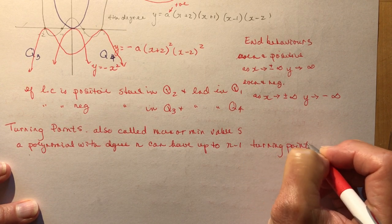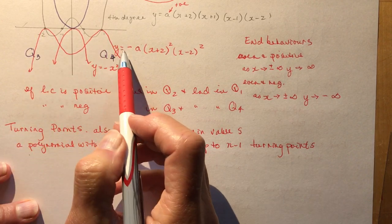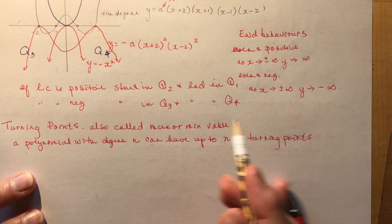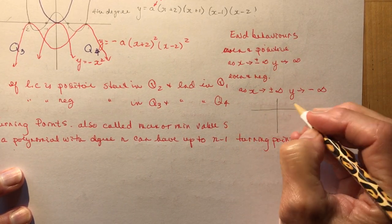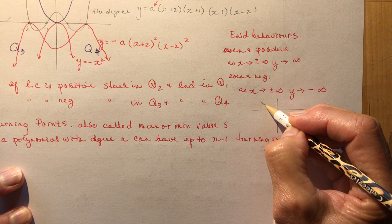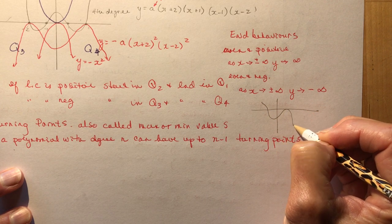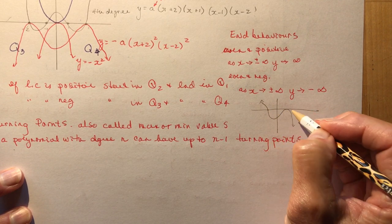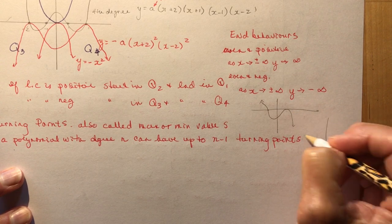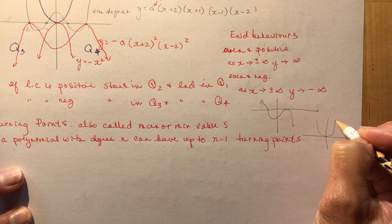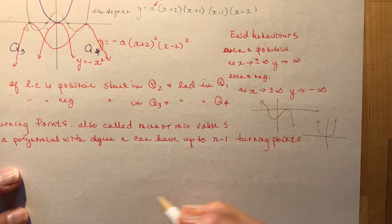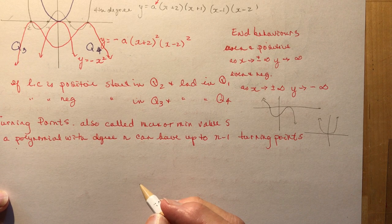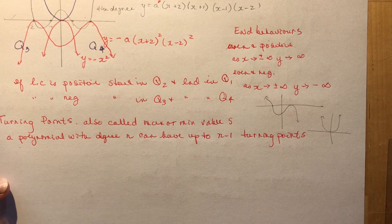So for this fourth-degree function, it had three turning points. You could also have two turning points — for example, something with a triple root and a single root. Or you could have y = x⁴, which only has one turning point. So a fourth-degree function can have up to three turning points, but may have fewer.